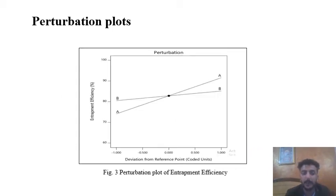In the perturbation plot of entrapment efficiency, both factors A and B are showing equal effect on the entrapment efficiency of quercetin.